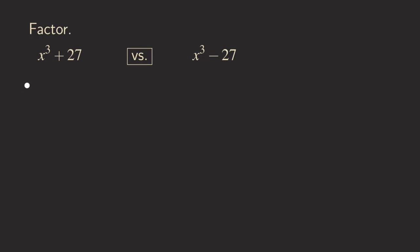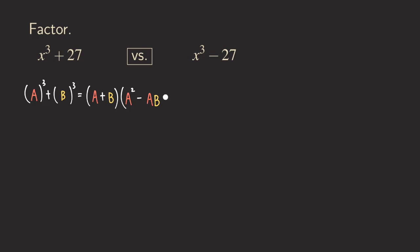For the sum, we write down the formula: something cubed plus something cubed. For the first term we have A, and for the second term we have B. That equals something with a plus sign — that's going to be A and then B. Continuing with the trinomial, we have A squared, then minus A times B, then plus B squared. So now we can write the sum of two cubes as this expression.